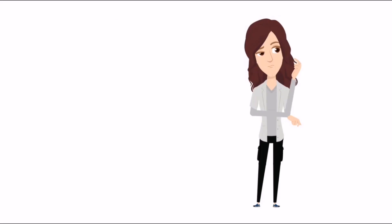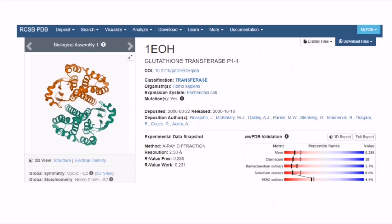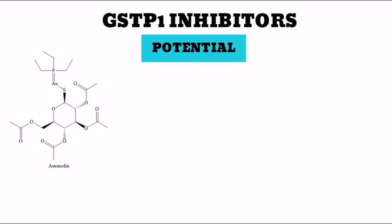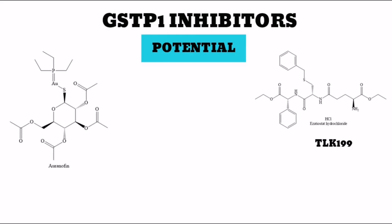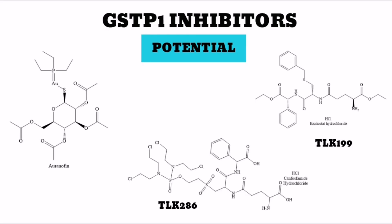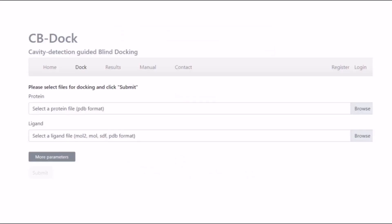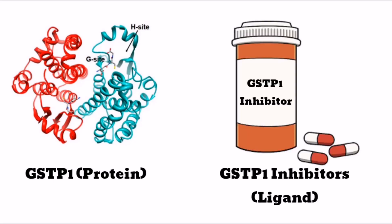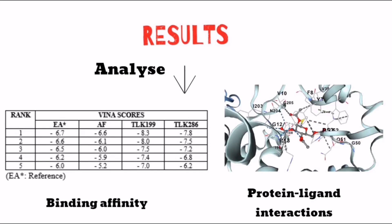For how this research was conducted: GSTP1 protein 1EOH was chosen from the Protein Data Bank (PDB). The reference inhibitor etracrynic acid and potential inhibitors discovered from literature review — Oranofen, Ezatiostat Hydrochloride (TLK199), and Canfosfamide Hydrochloride (TLK286) — were downloaded from PubChem. AutoDock was used to perform protein-ligand docking between protein GSTP1 and the ligand GSTP1 inhibitors, consisting of both reference and potential inhibitors. Results were analyzed based on binding affinity and protein-ligand interactions, which are the two main criteria used in determining the eligibility of potential inhibitors.